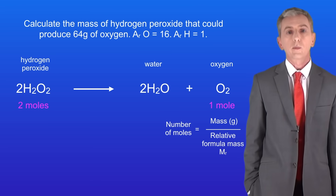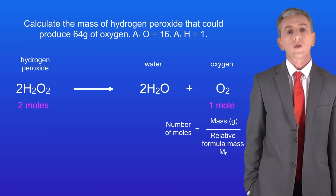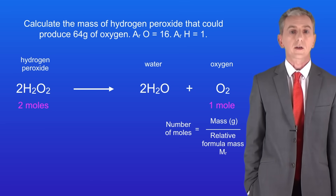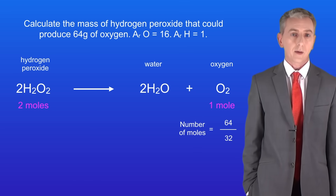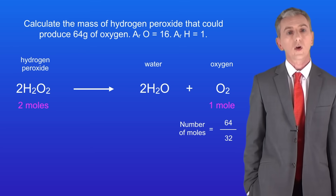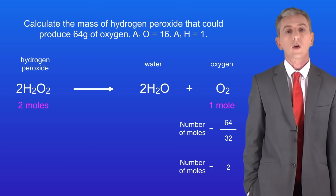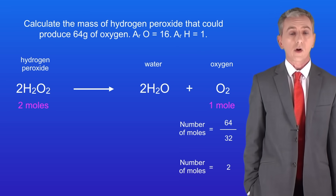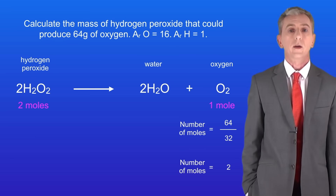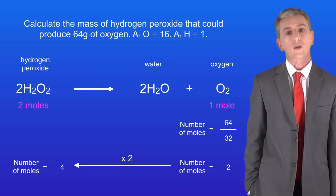We can calculate the number of moles of oxygen using the equation: number of moles equals the mass divided by the relative formula mass. The mass is 64 grams and the relative formula mass of oxygen is 32. This means that we're making 2 moles of oxygen. We know that we need 2 moles of hydrogen peroxide to make 1 mole of oxygen, so that means we need 4 moles of hydrogen peroxide to make 2 moles of oxygen.